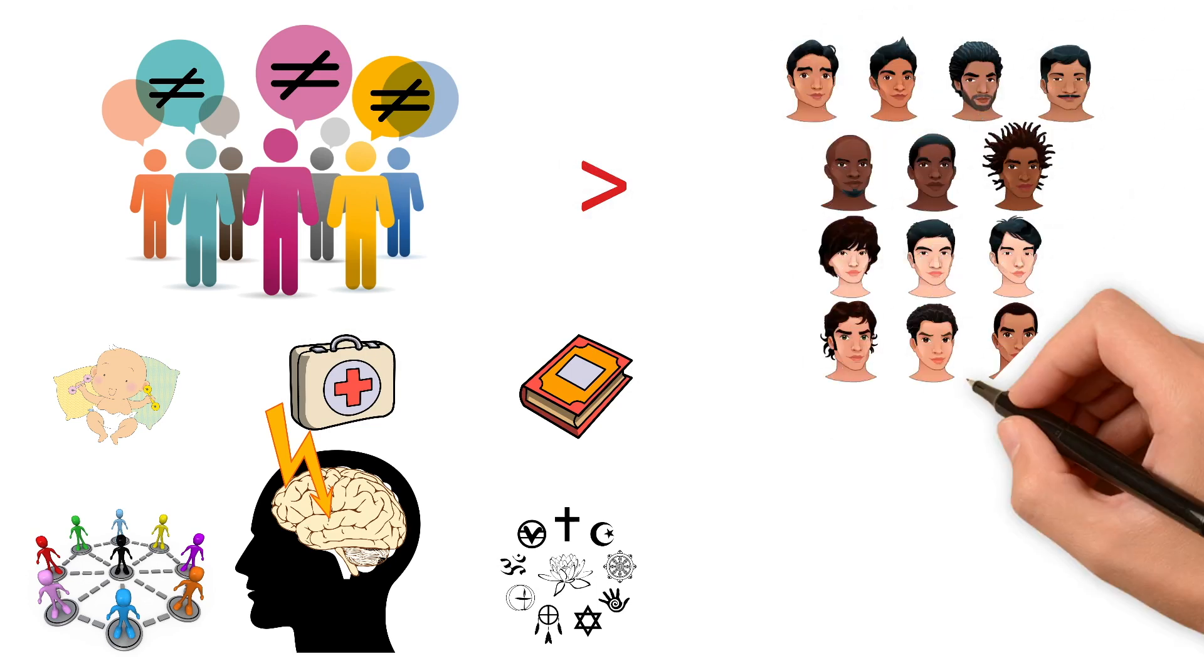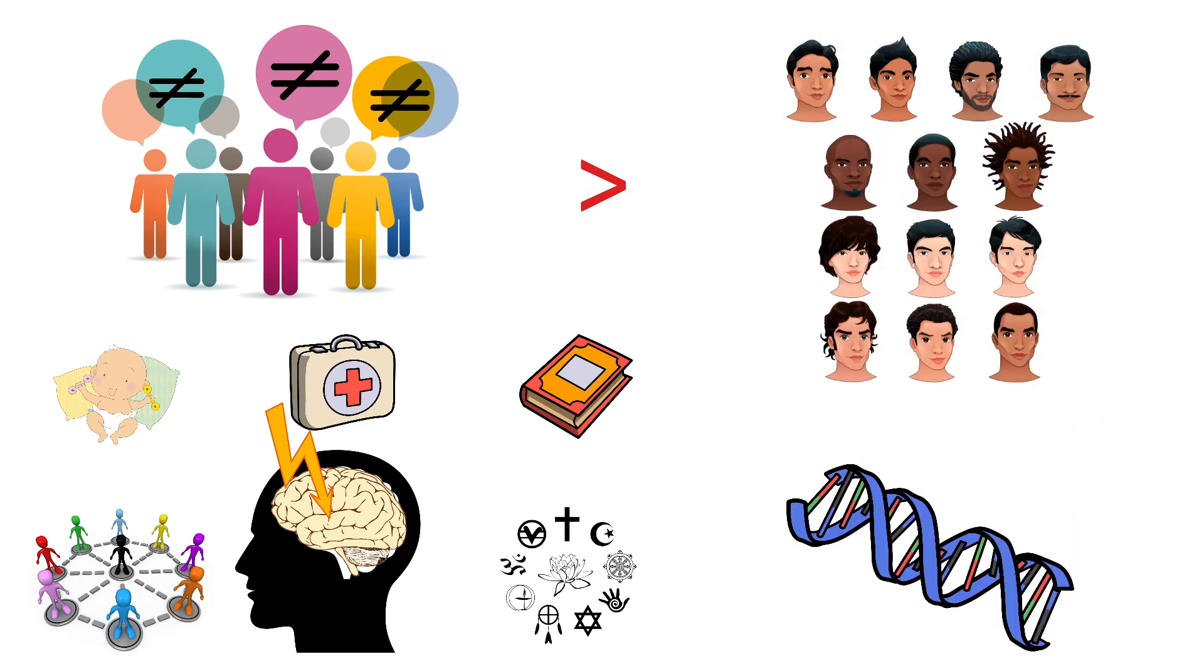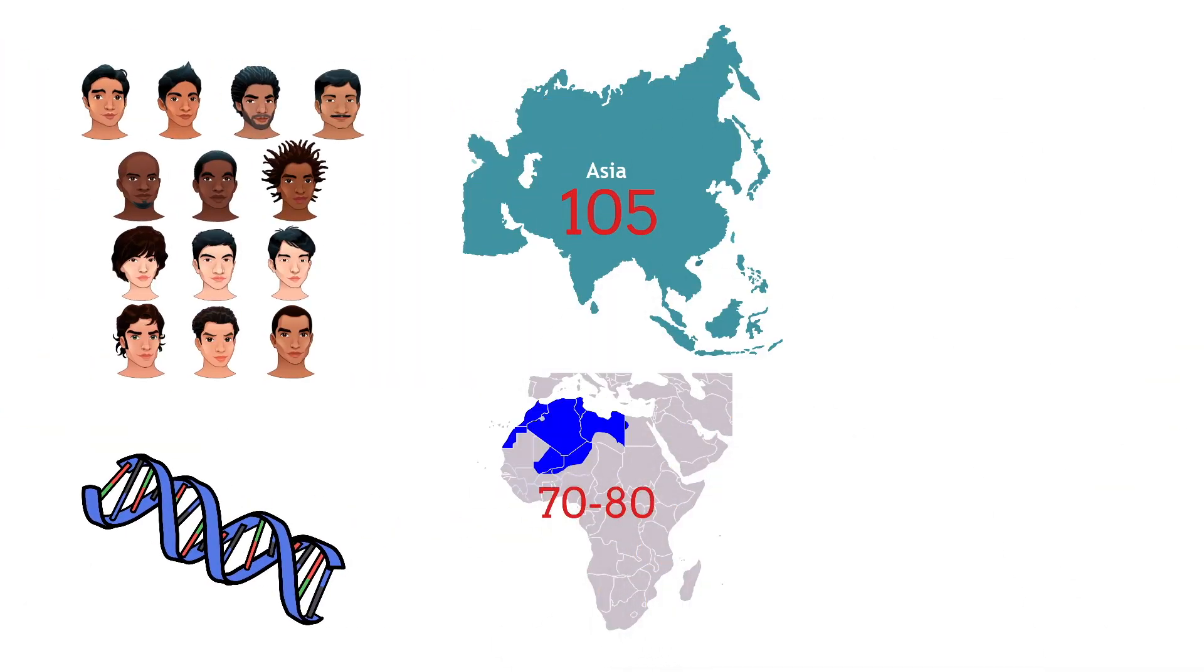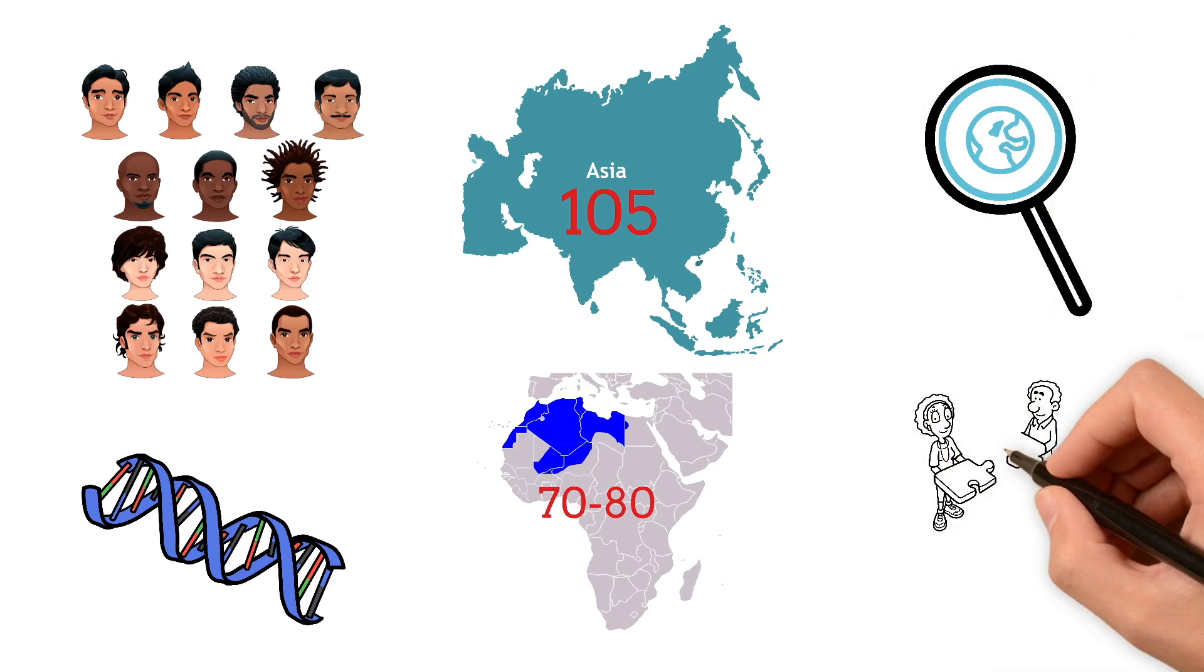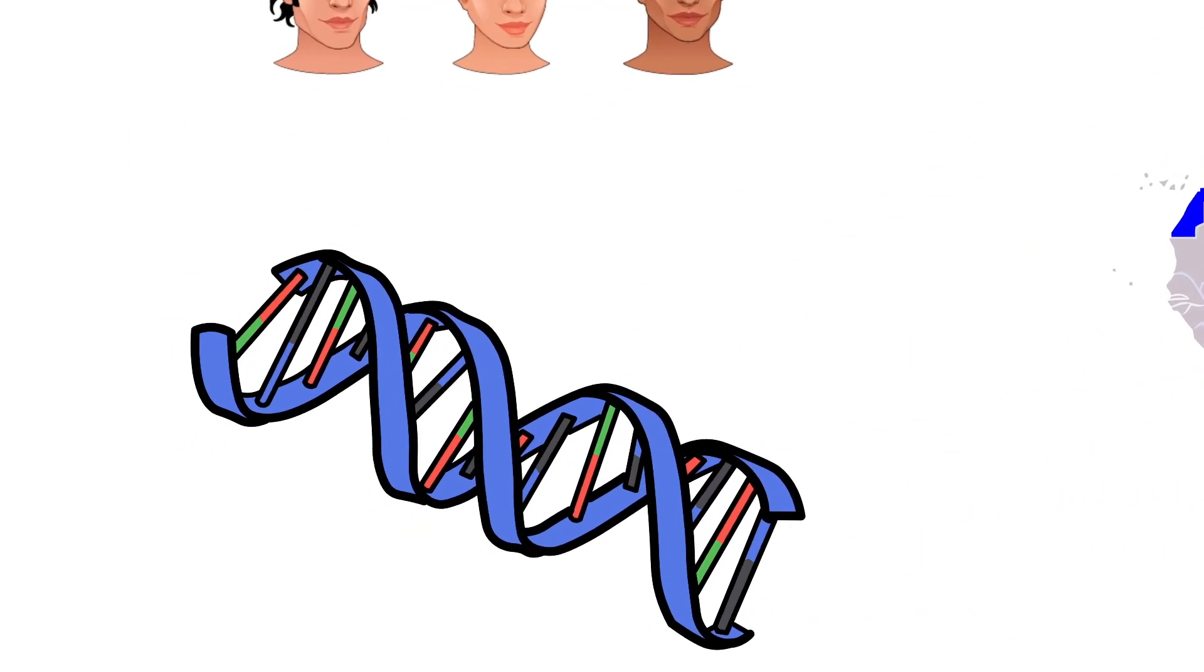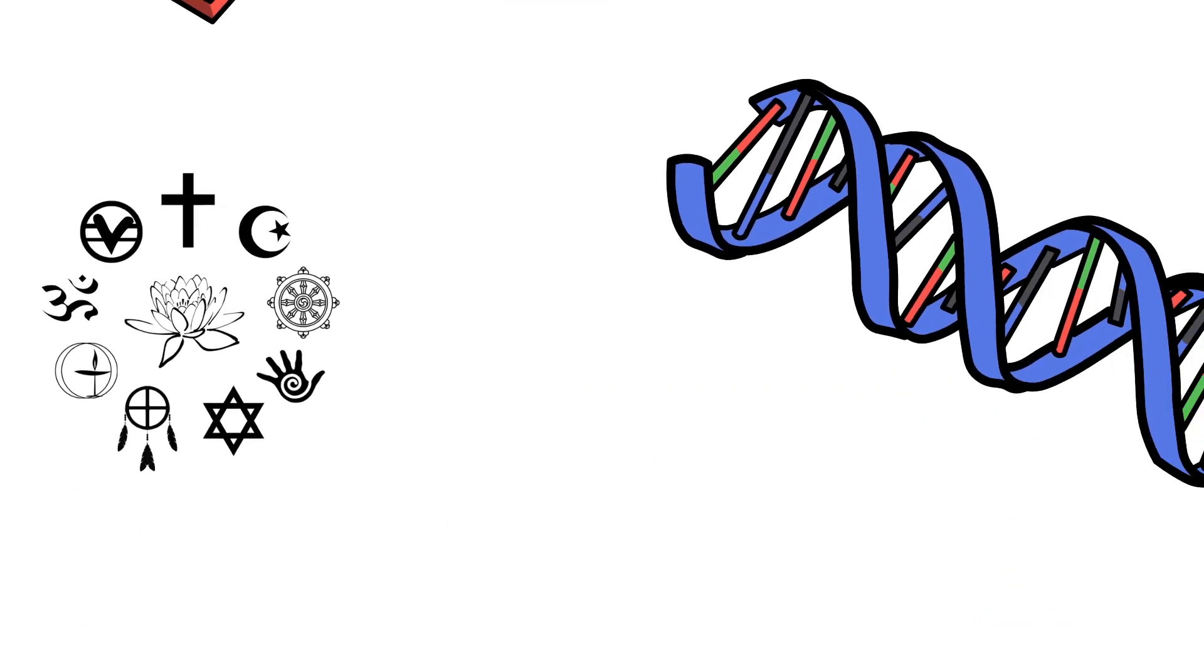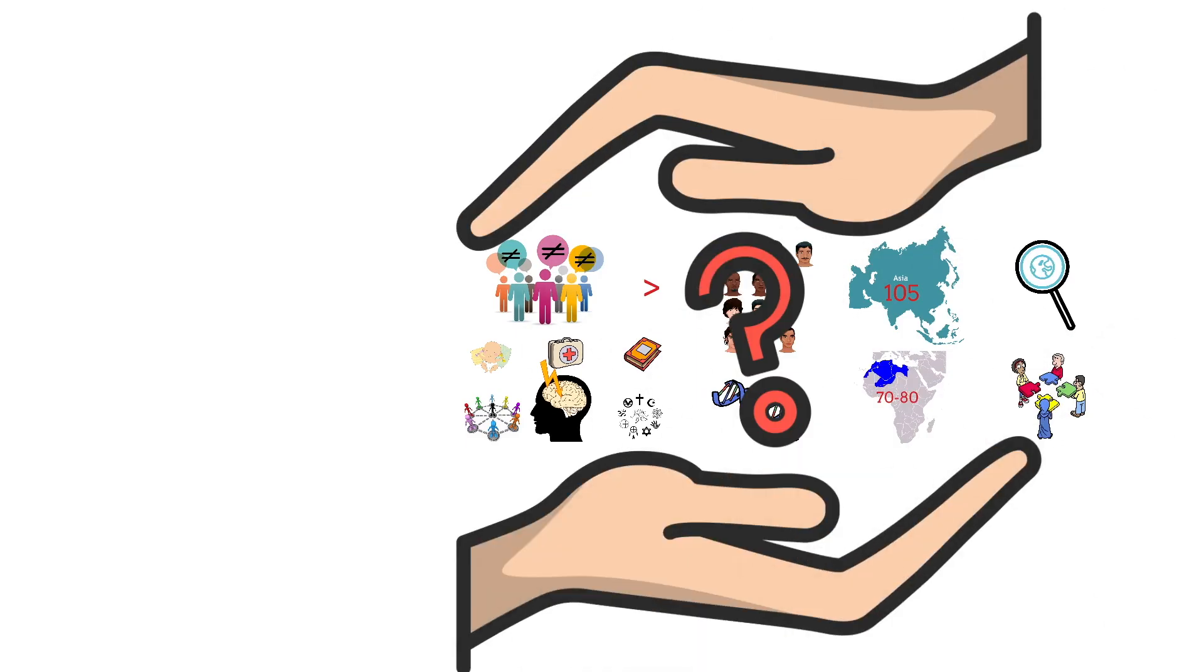So if there's no purely genetic explanation, why do those average differences between countries still exist? Maybe the answer is not in one place. Maybe it has to do with multiple factors difficult to separate. Maybe it's not just about biology or just about culture, but a complex interaction between both. Or maybe we simply don't yet have all the answers.